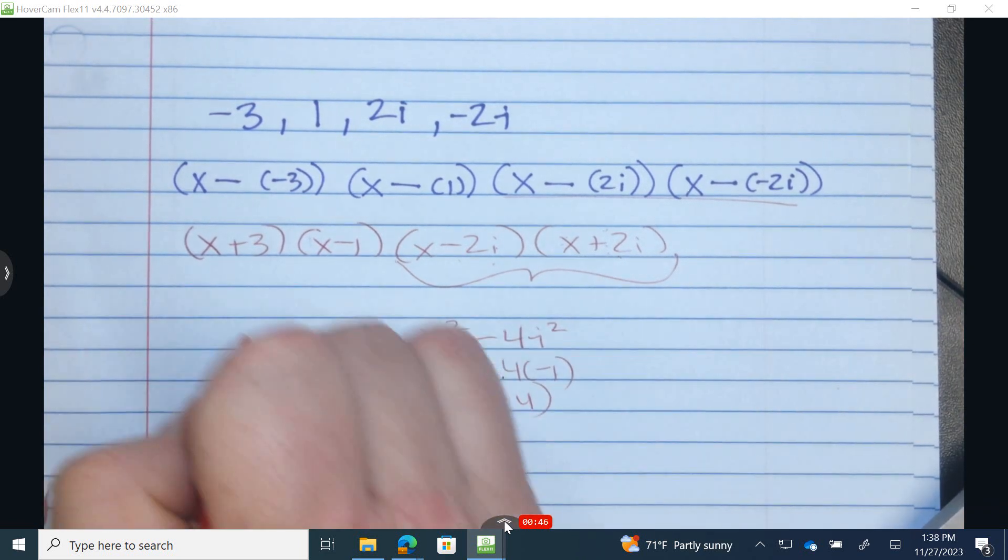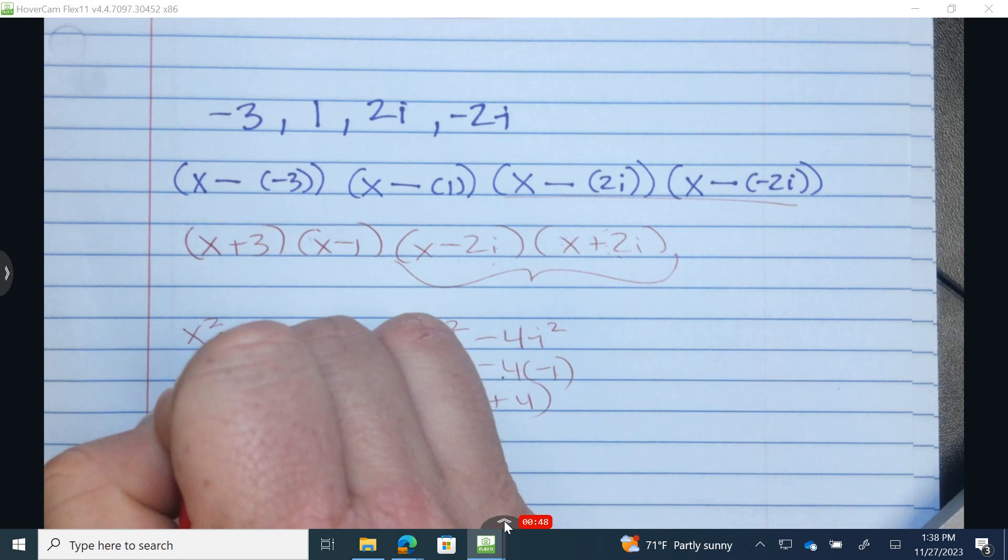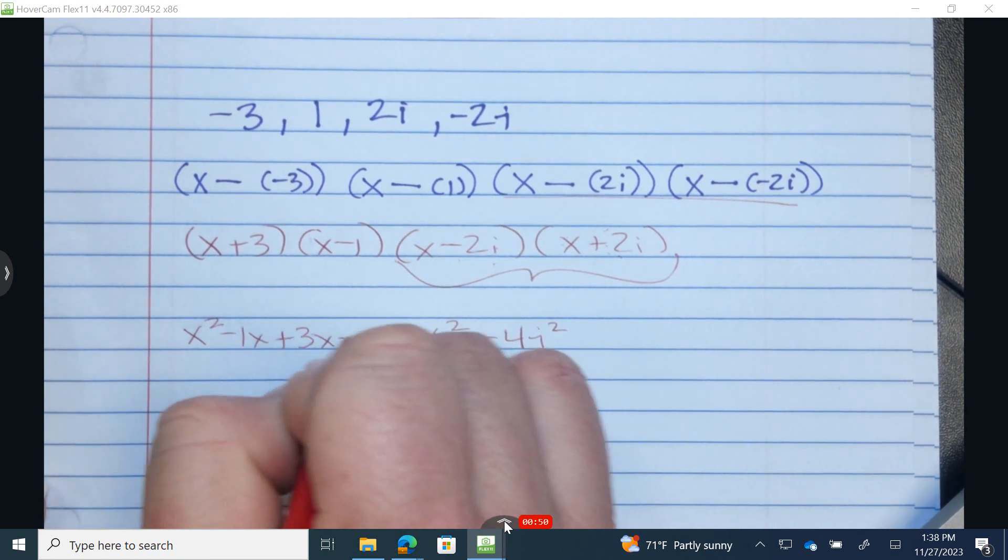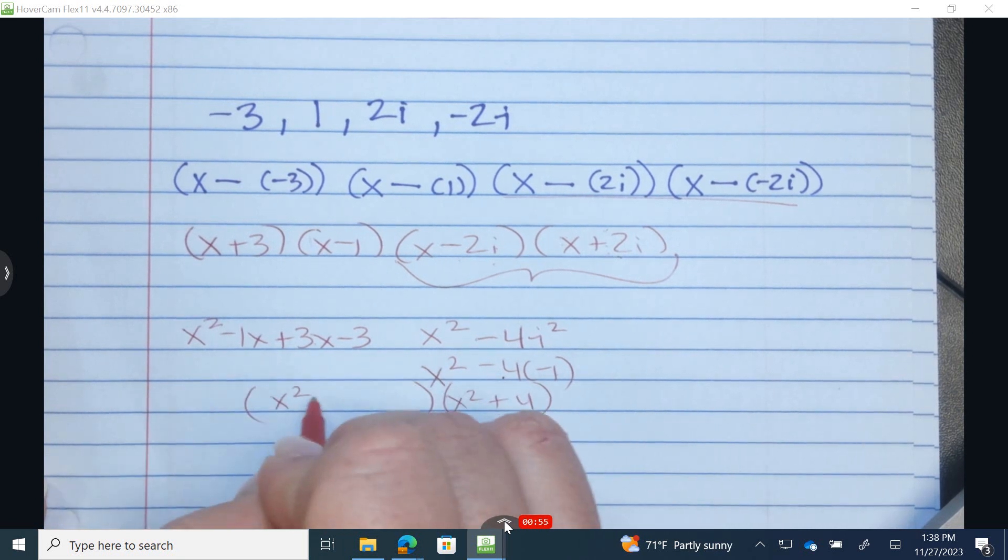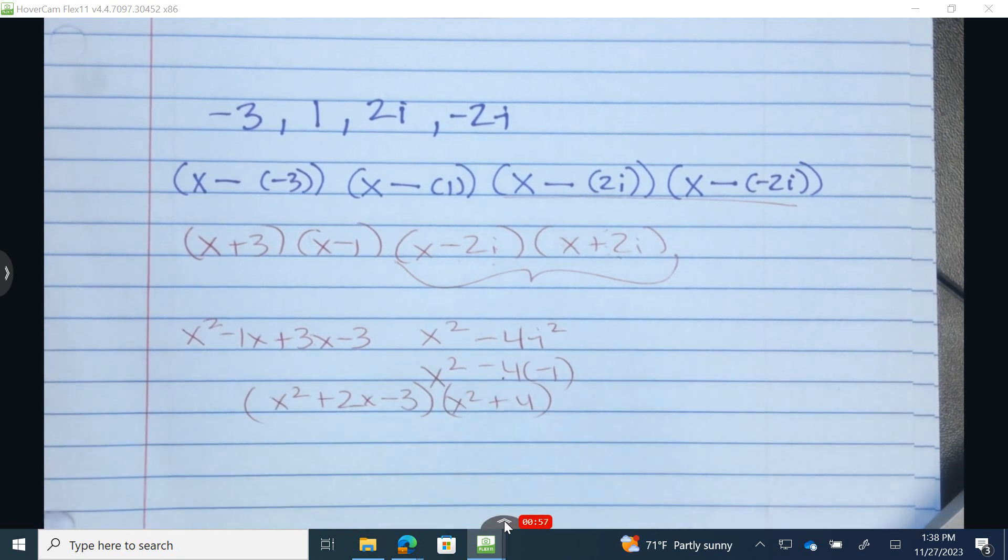I'm going to multiply the front 2. Front, outside, inside, and last. When I combine like terms, I have x squared plus 2x minus 3.